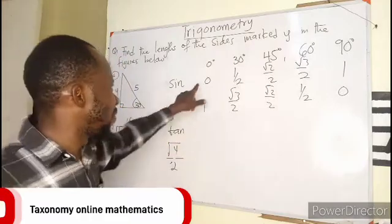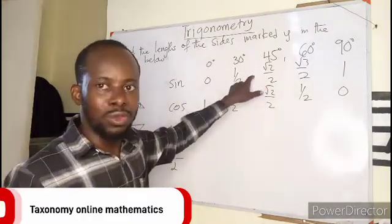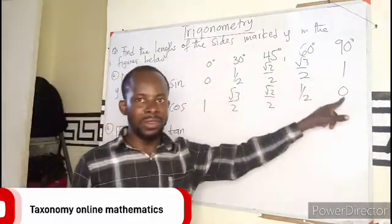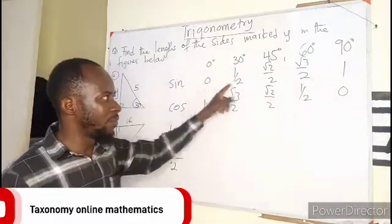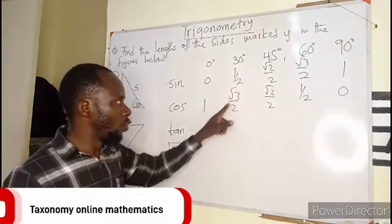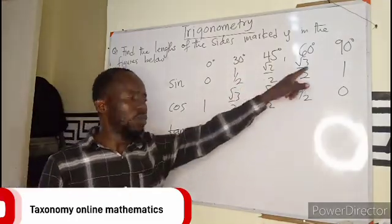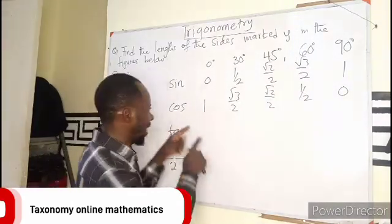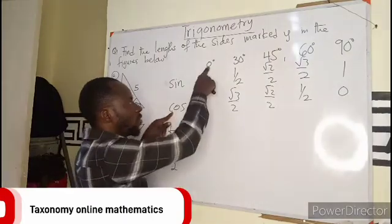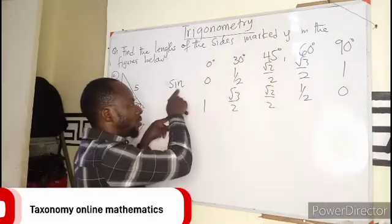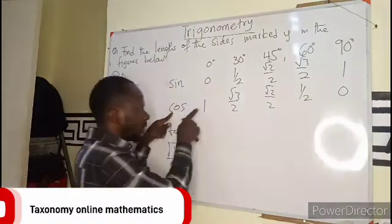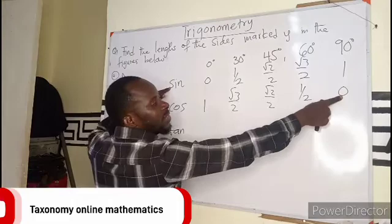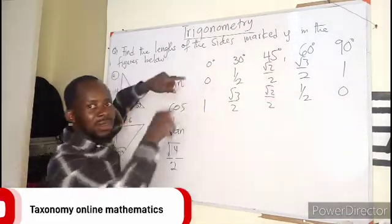You can see that there is an opposite pattern here. If I take cos 0, cos 0 is the same as sine 90. Cos 90 is the same as sine 0. So we can check that.